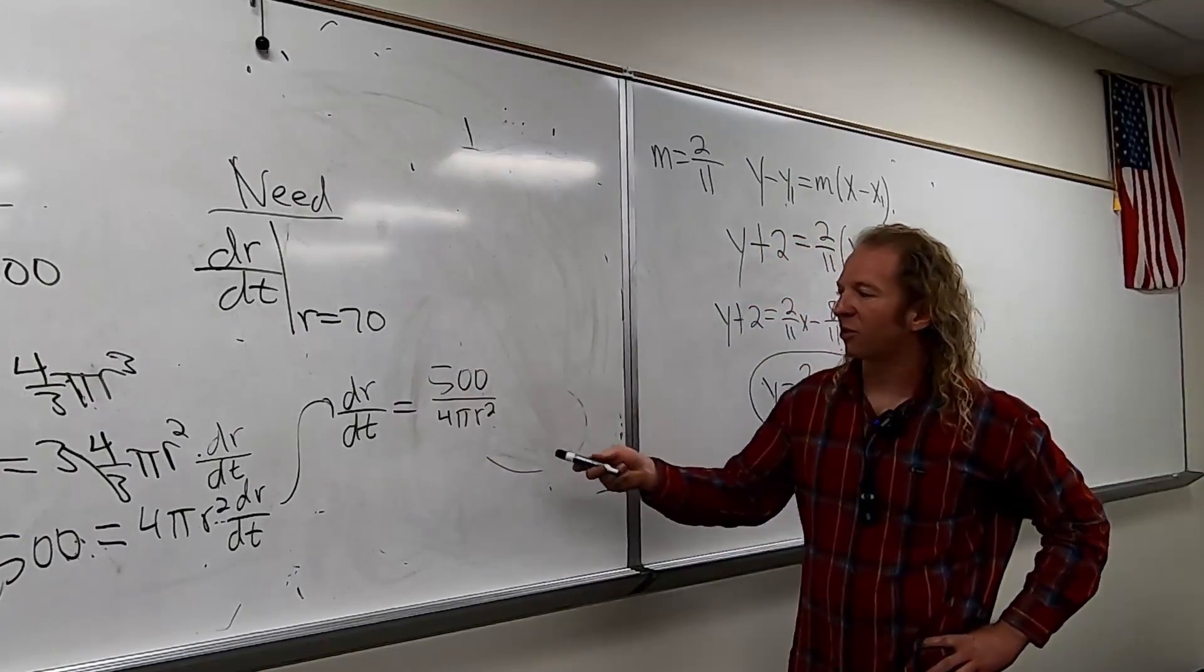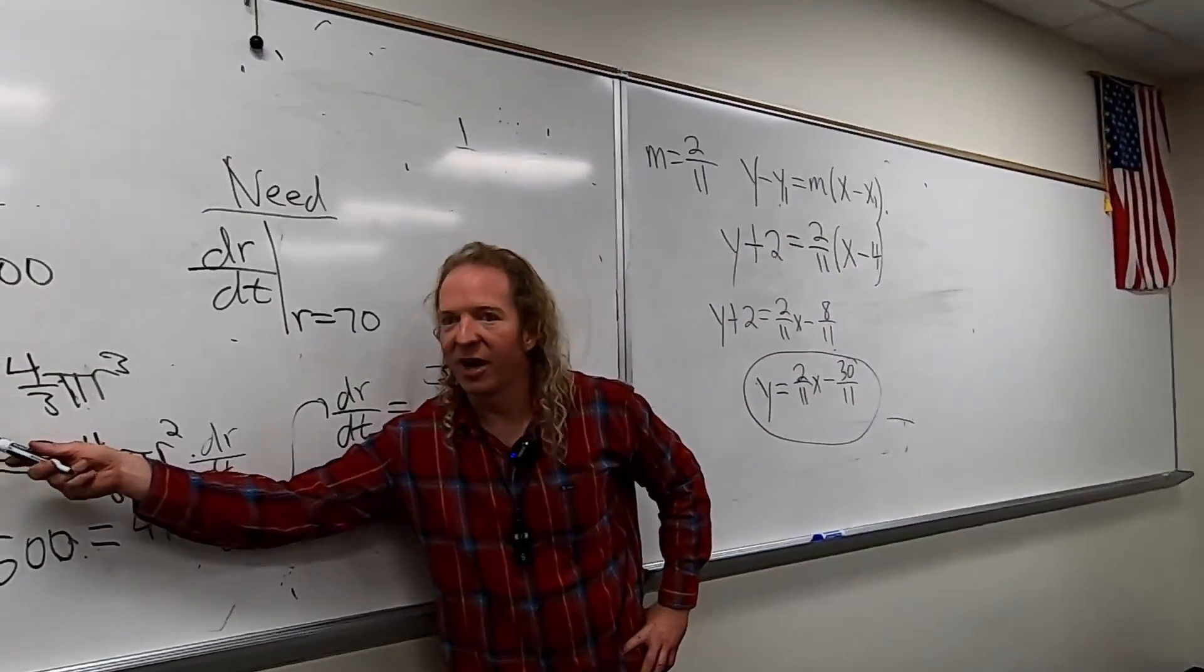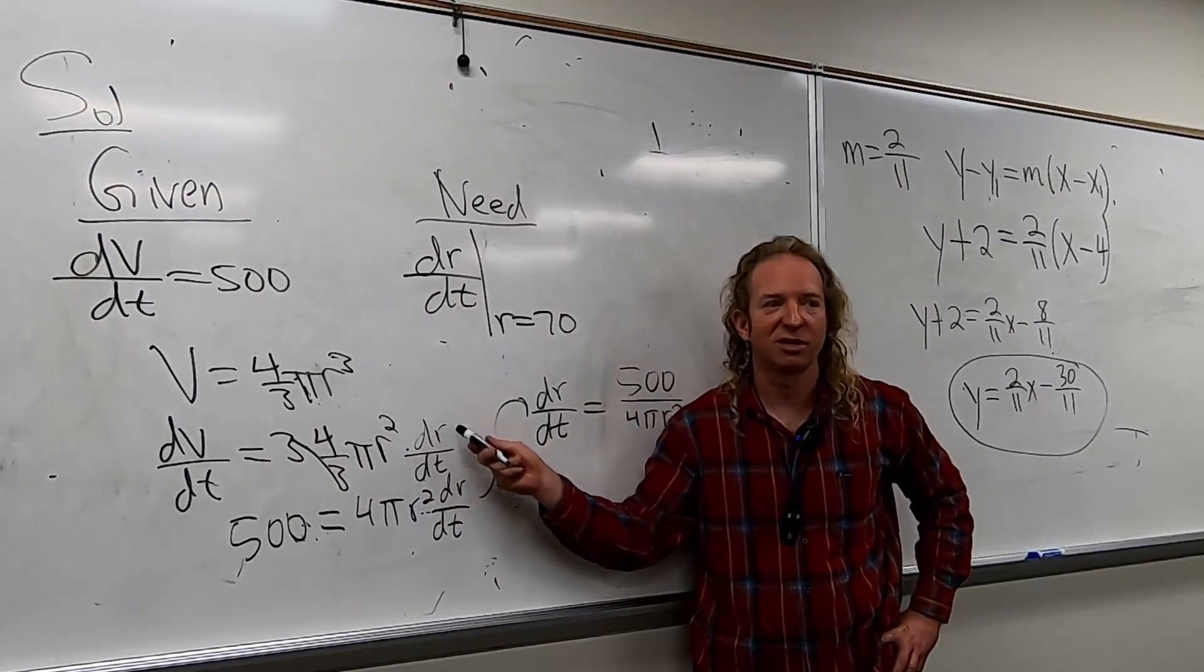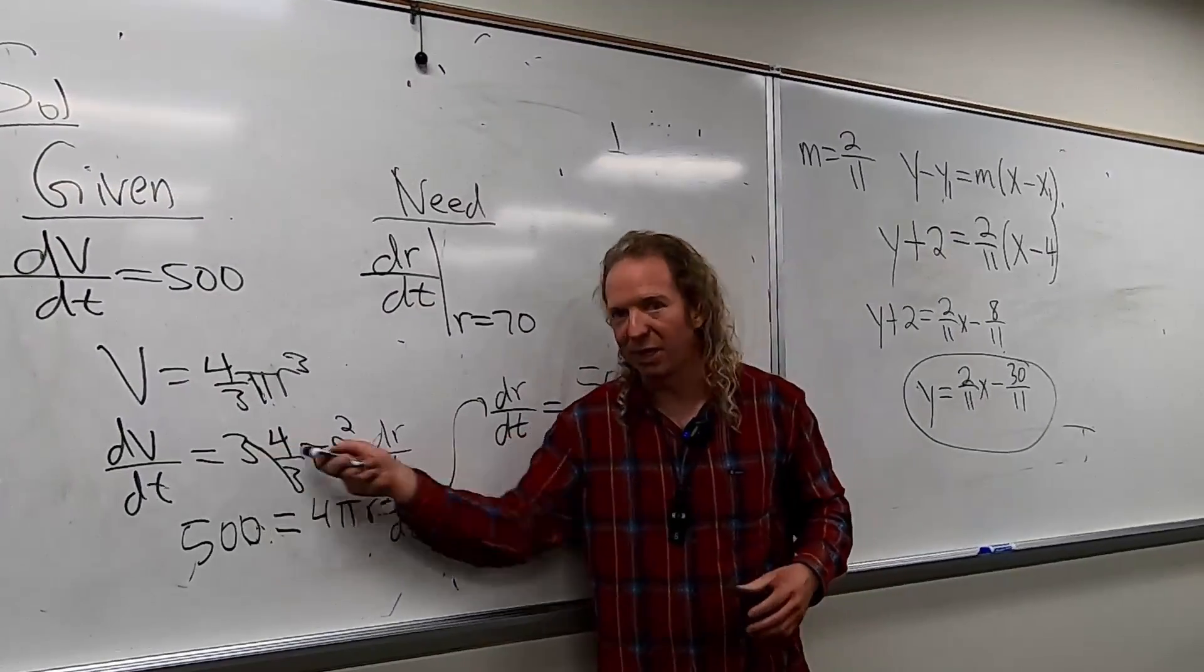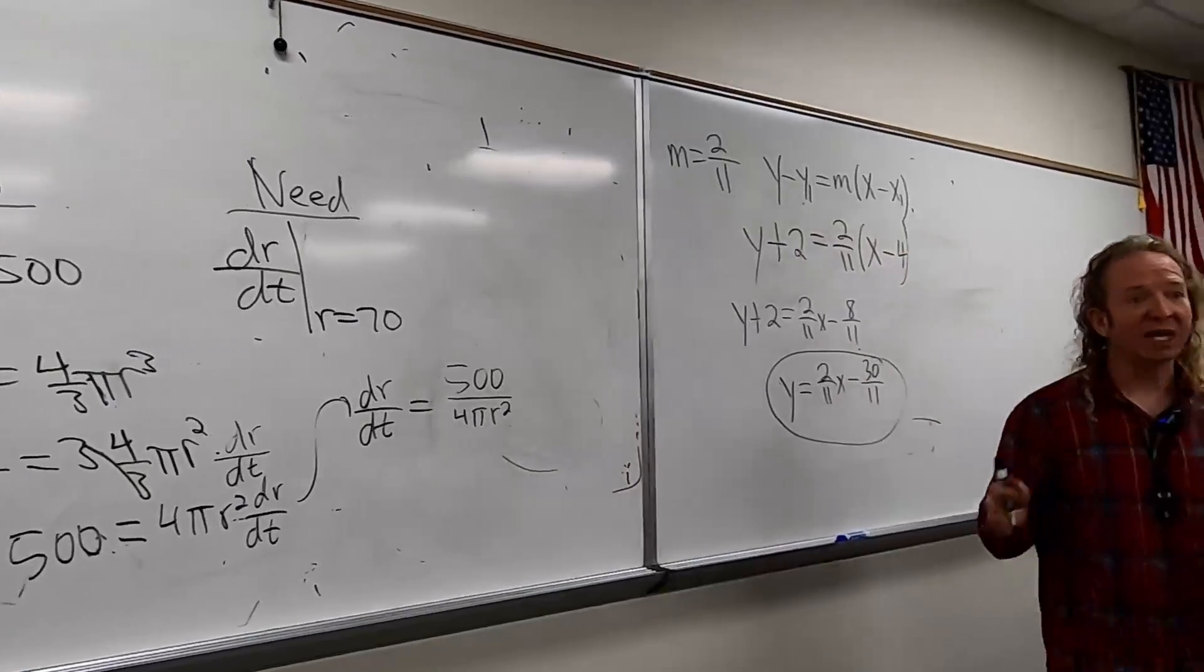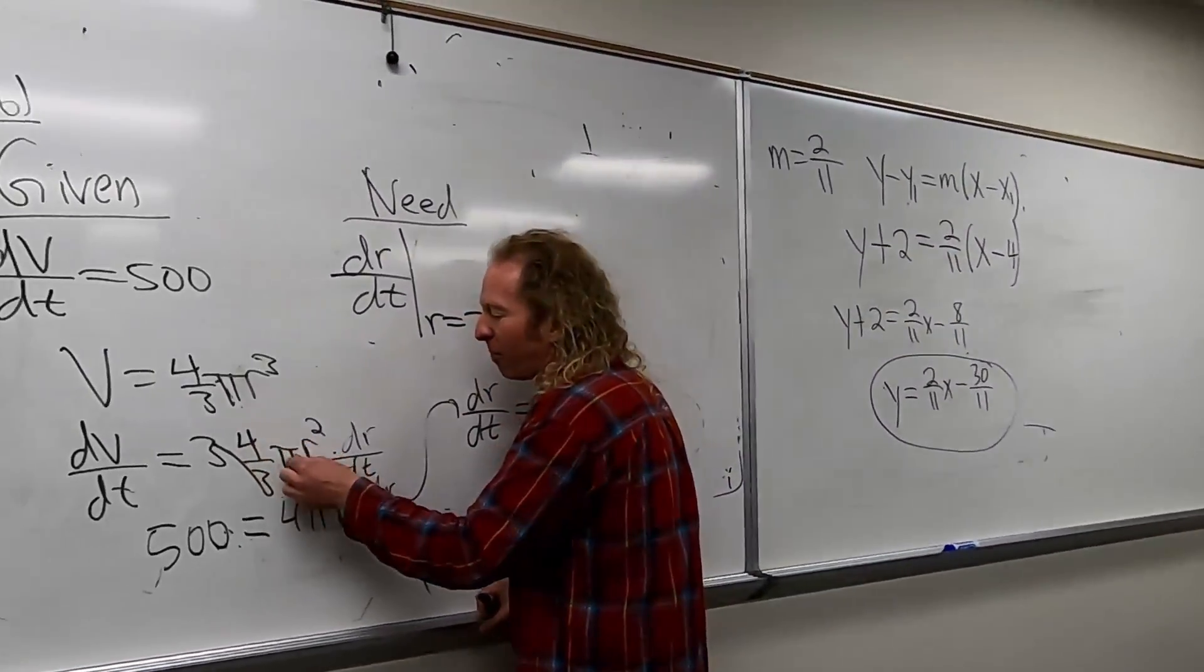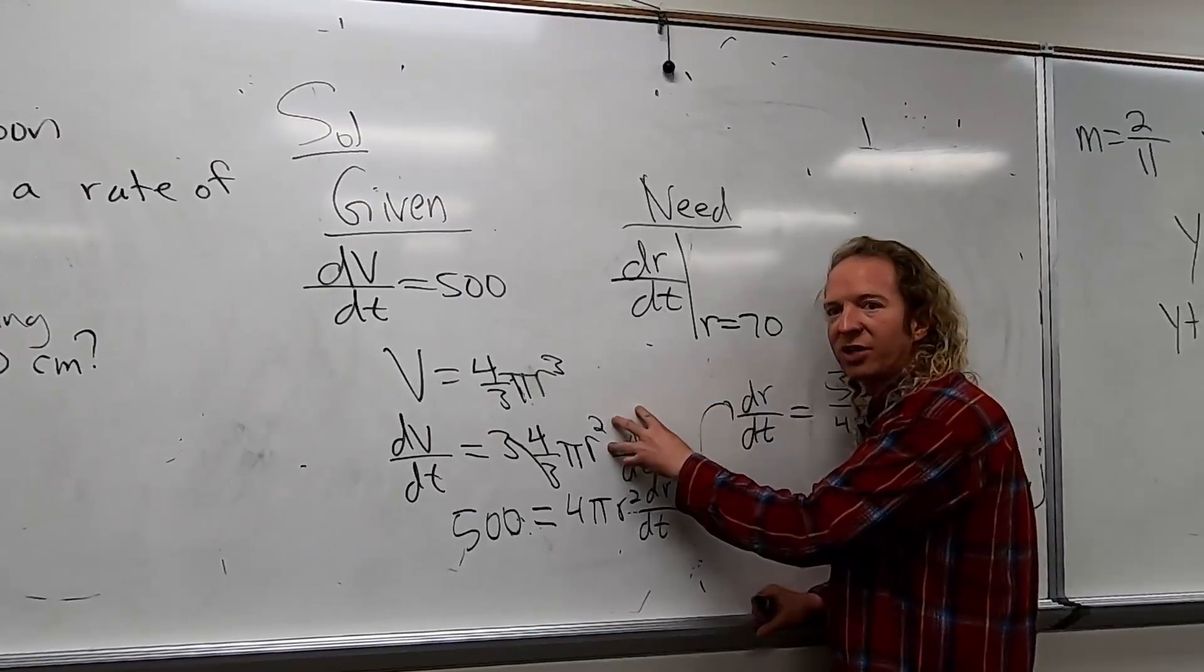And then you can divide by 4 pi r squared. So we get dr/dt equals 500 over 4 pi r squared. So, by the way, this is why it's called related rates. You have the rate of change of volume related to the rate of change of radius. Of the radius. And they're related by this equation. So you have two related rates of change, right?